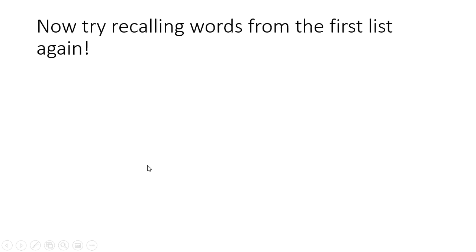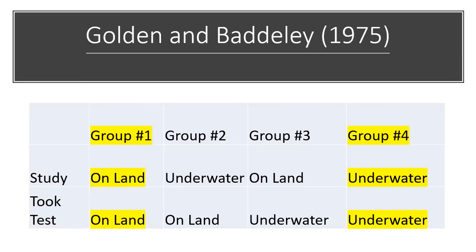Let's talk about a study by Godden and Baddeley. They had scuba divers memorize a list of words either on land or underwater. Group one studied on land and was tested on land. Group two studied underwater and was tested on land. Group three studied on land and was tested underwater. Group four studied underwater and was tested underwater. Groups one and four scored the highest — they remembered the most words because they studied in the same environment where they took the test. This is the idea of context-dependent memory.